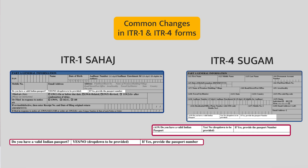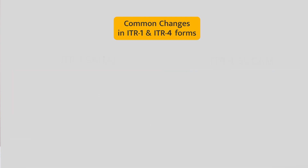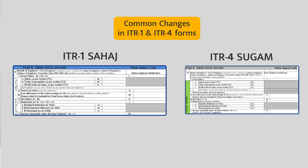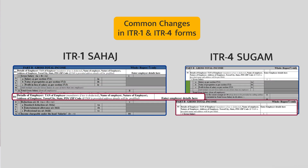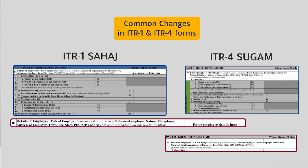Now let's talk about Gross Total Income. The changes are in salary income, house property income, and other sources income. First, salary income: a major change came in the year 2020, where the salary was consolidated in a consolidated form with no need to declare the employer's name. But now the employer's name, address, and all such details are mandatory. You also have to indicate the TAN number of your employer when the employer has deducted your tax.